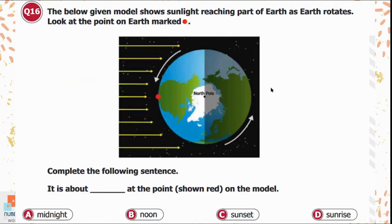Question 16: The model shows sunlight reaching part of Earth as it rotates. Complete the sentence: it is about [blank] at the point shown in red on the model. Options: A) midnight, B) noon, C) sunset, D) sunrise. The red mark is exactly in the center of the sunlit side, so it is about noon at that point — option B is correct.